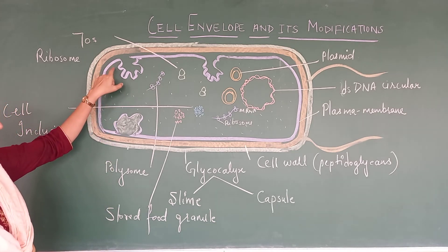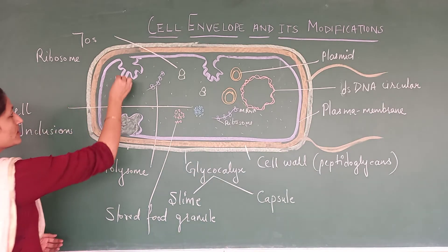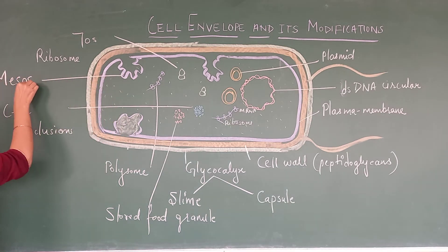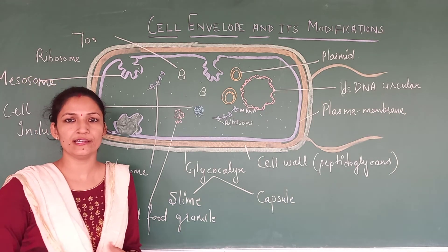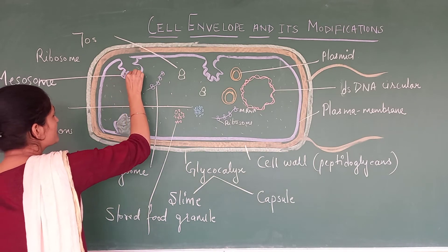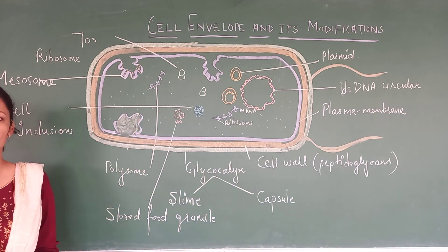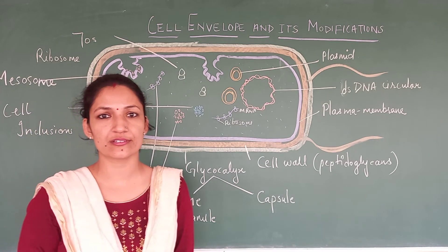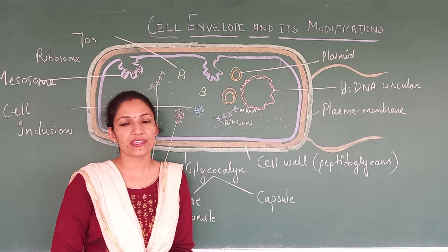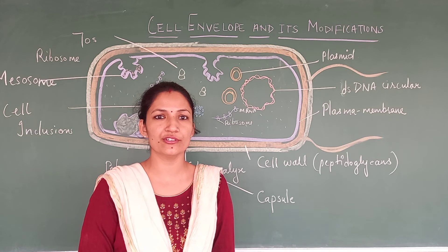Now, the important thing — will this plasma membrane show infoldings? These infoldings will perform various functions. This infolding of the plasma membrane is simply known as mesosome, which is analogous to mitochondria in a eukaryotic cell. It means this is going to carry some respiratory enzymes. Respiratory enzymes are present in this mesosome and they will help in carrying out respiration. Structurally, these infoldings can be present in the form of vesicles, lamellae, or tubules, and accordingly they will perform various functions.